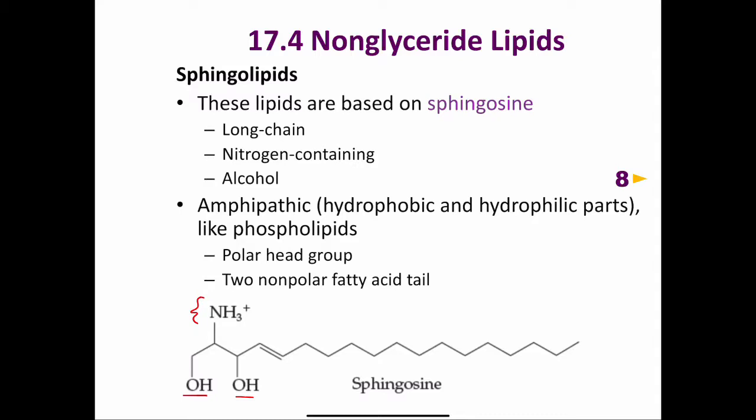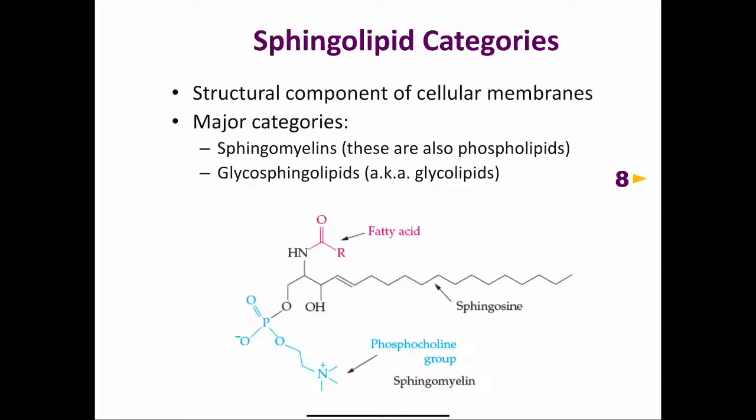The amino group exists in a protonated form, NH3+, because at physiological pH, an amine, which is NH2, will be protonated to an ammonium derivative as shown here.